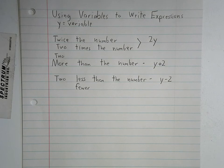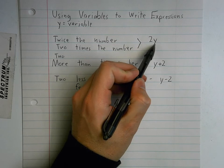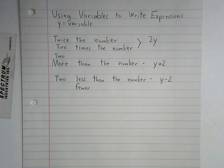On the first one, is this twice the number? Should it mean two times y? That's what it is. Two times y.